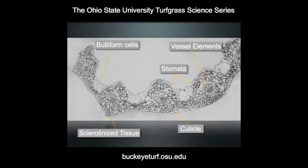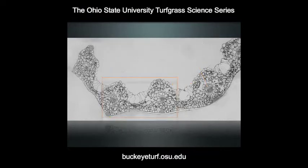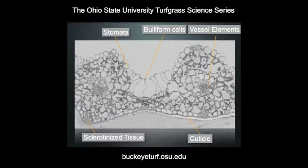The stomates are the port on the leaf that allow for gas exchange. The cuticle, on the other hand, is a waxy surface that serves as a barrier between the plant and its living environment. If we take a section of this leaf and magnify it, we see the same view except with a closer image of the stomates and the cuticle.